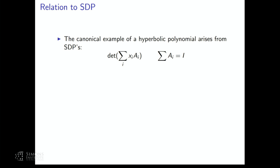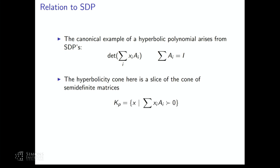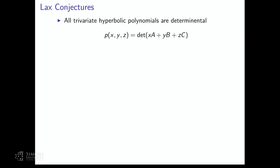The relationship to SDPs — if we take a collection of symmetric matrices and form a determinantal polynomial from them, with some normalization so the all-ones vector is in the hyperbolicity cone, then this is a hyperbolic polynomial equivalent to the spectral theorem, and the hyperbolicity cone is a slice of the cone of SDP matrices. The geometric object we're optimizing over is equivalent to SDPs. There are affirmative and negative results here. One is Helton-Vinnikov, which says if you take a tri-variate hyperbolic polynomial, it can be exactly written as a determinantal polynomial — meaning all tri-variate hyperbolic polynomials have optimization equivalent to SDPs.